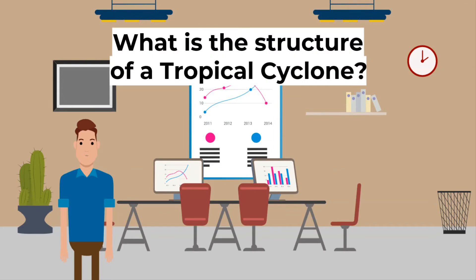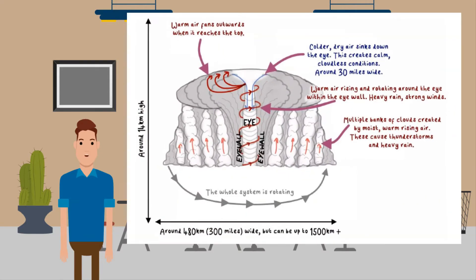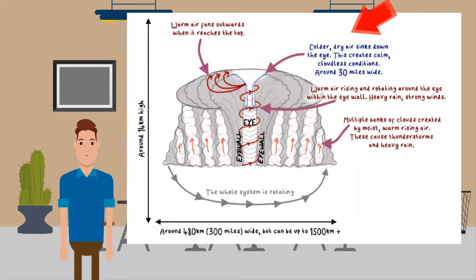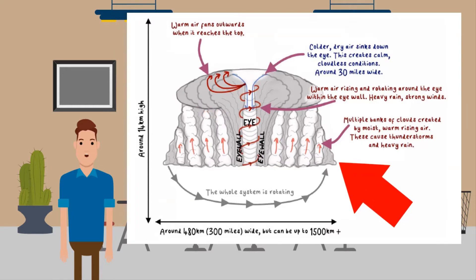What is the structure of a tropical cyclone? There are complicated processes going on inside a tropical cyclone. Here is a cross-section — imagine if you cut a tropical cyclone in half and looked in the middle. Warmer air fans outwards when it reaches the top; colder dry air sinks down through the eye, creating calm, cloudless conditions about 30 miles wide. Warm air rising and rotating around the edge within the eye wall causes heavy rain and strong winds, and multiple banks of clouds created by moist warm rising air cause thunderstorms and heavy rain.